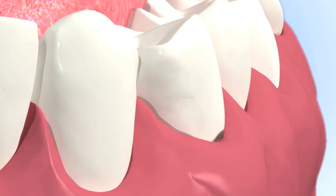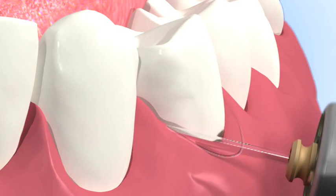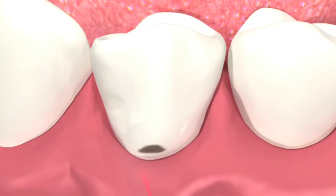To start the cavity prep, first check to see if access to the decay requires the removal of gingival tissue. Remove any gingival tissue necessary to reveal the decay. Start about one centimeter away from the tooth surface and slowly advance toward the decay until ablation can be visualized.